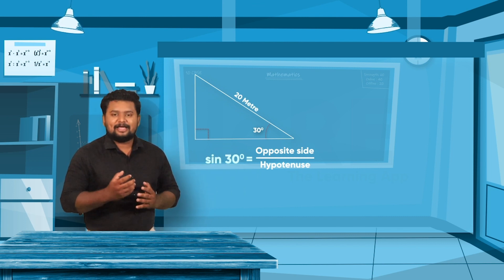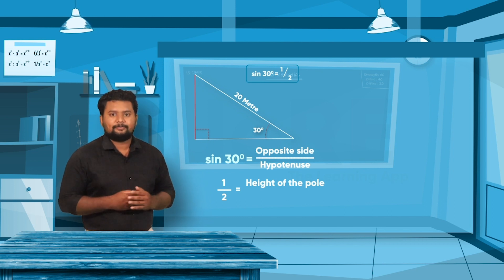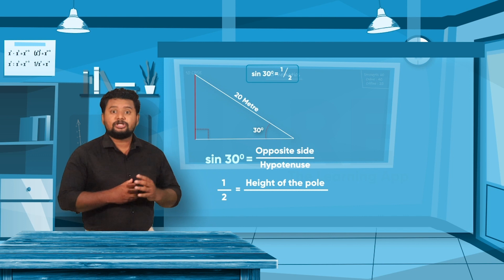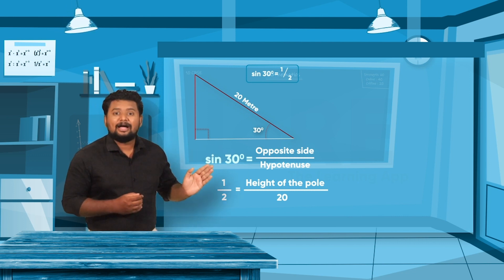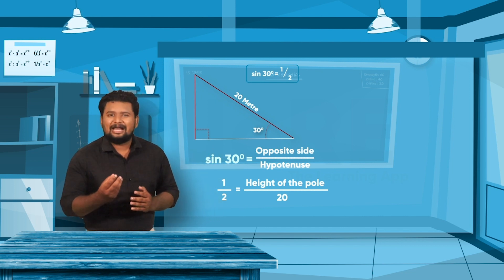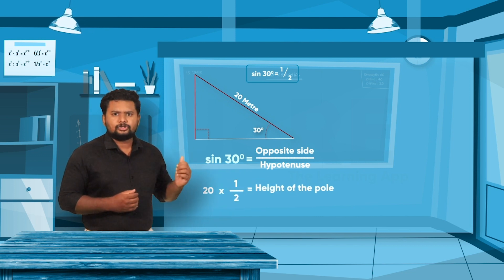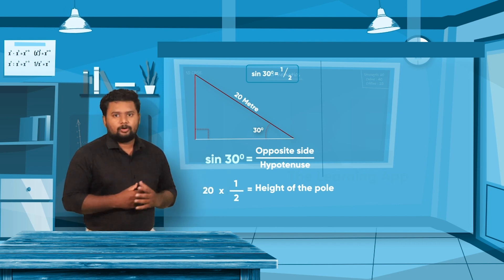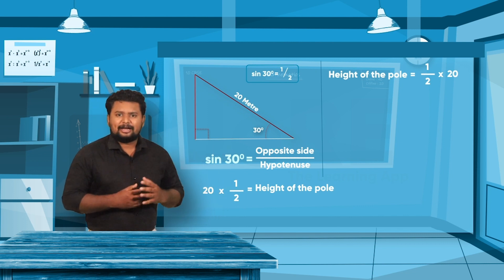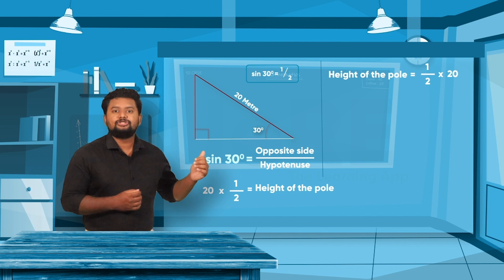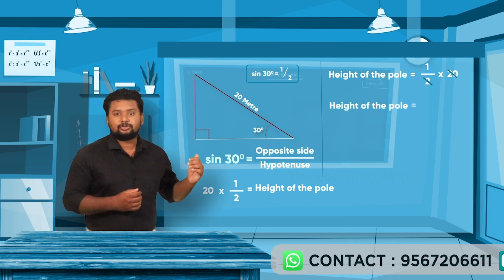Sine 30 equals 1/2, which equals the height of the pole divided by 20. So 1/2 equals height of the pole divided by 20. Therefore, height of the pole equals 1/2 multiplied by 20. The 2 cancels with 20, giving 10. So the height of the pole is equal to 10 meters.